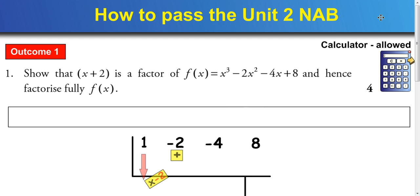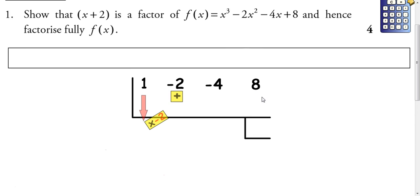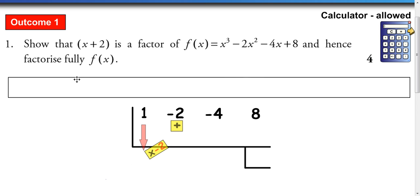In this video lesson we're going to look at how to pass Higher Unit 2 NAB. This NAB is the one taken from HSN and I'm going to show you how to get full marks in it. Now in Outcome 1 you'll need 4 out of 6 to pass it, but let's look at how to get all the marks.